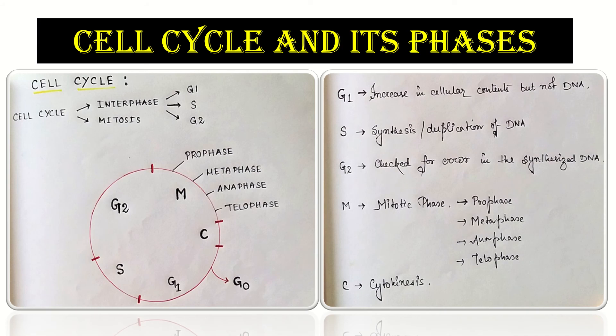Now let's come to this diagram. Here you can see the diagram of a cell cycle. The cell cycle here is broadly divided into two parts: one is the interphase and the other is mitosis. The interphase has got three parts to it: G1, S and G2.